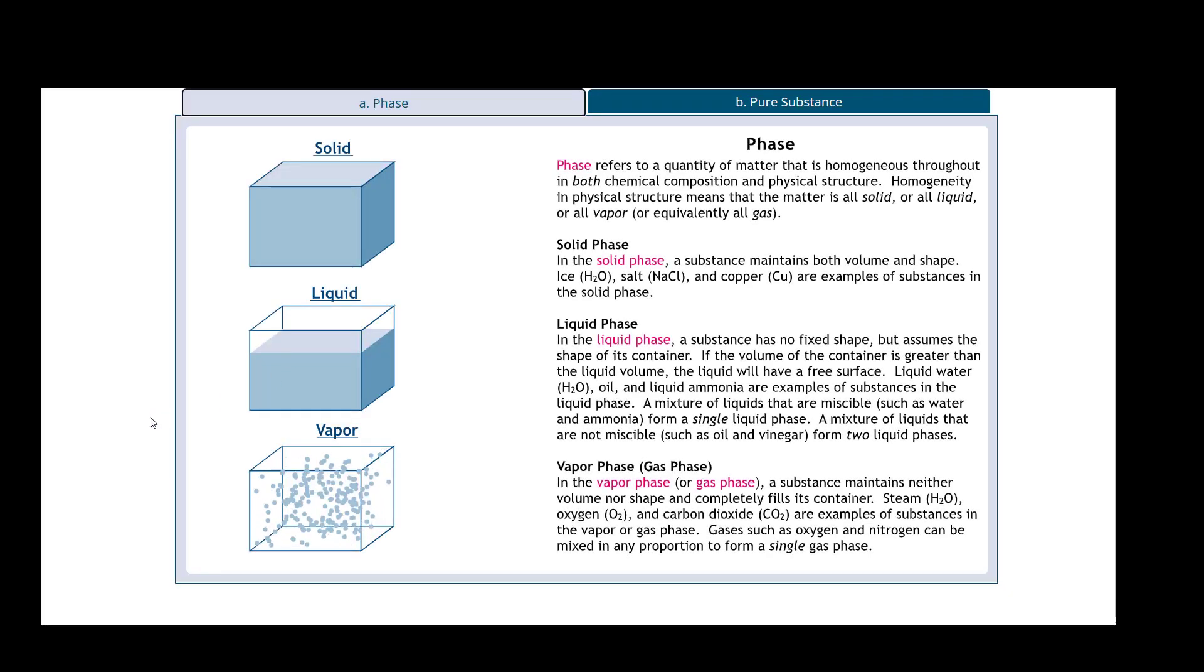Phase refers to the quantity of matter that is homogeneous throughout in both chemical composition and physical structure. Basically, the phase is the state at which the chemical composition is existing the same, right? A solid, a liquid phase, a vapor or gas phase. It goes into more information about each one of those.